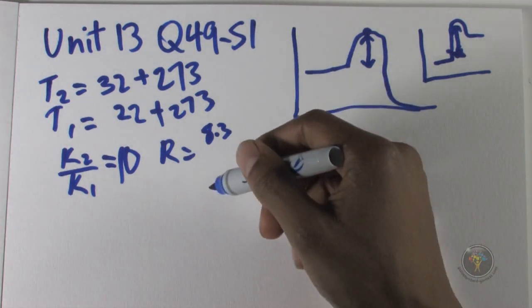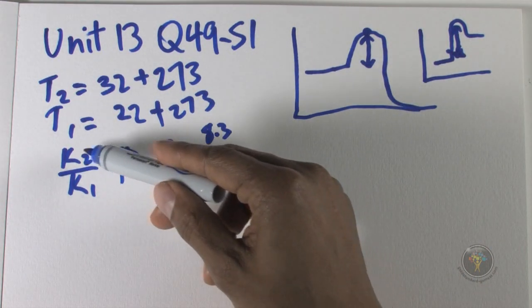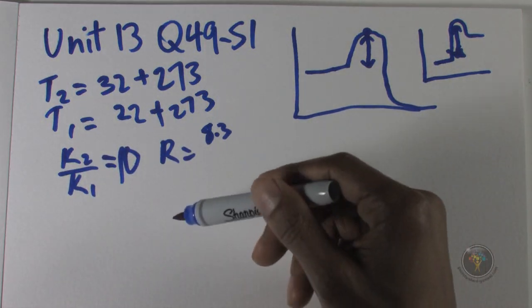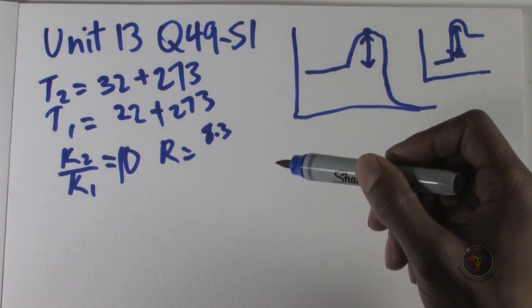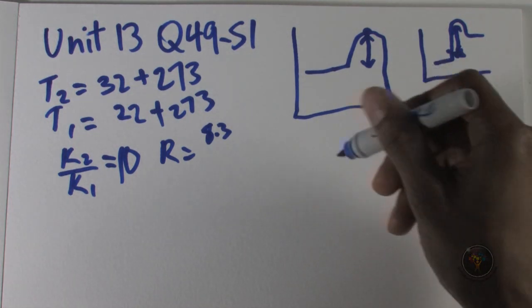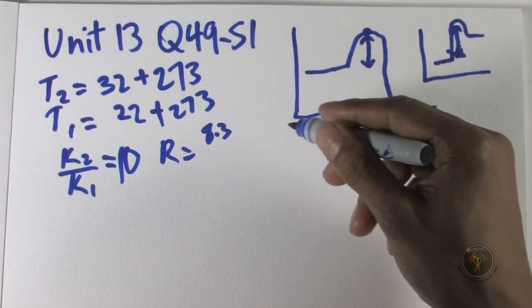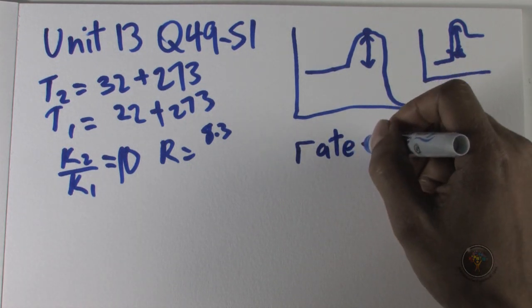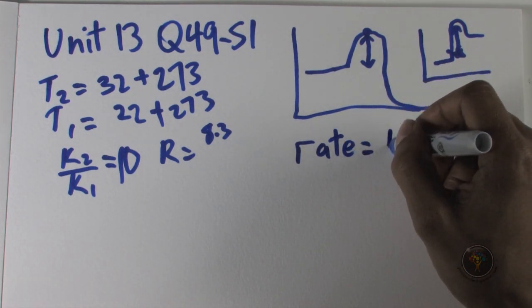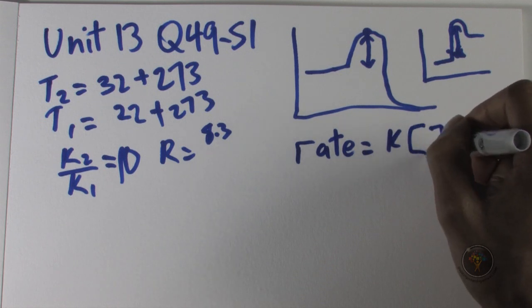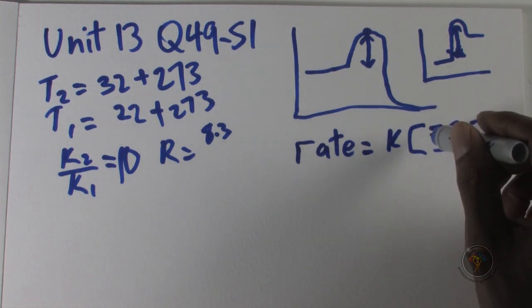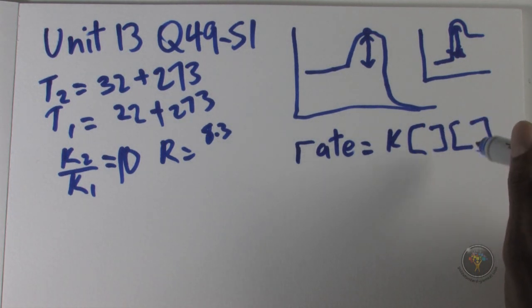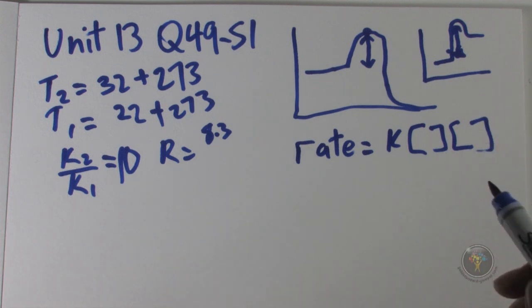Let me explain what permitted me to say k2 over k1 is equal to 10 when they said the rate of a reaction is 10 times faster. The rate law is rate equals k times a concentration of something times a concentration of something. This is the general look of the rate law.